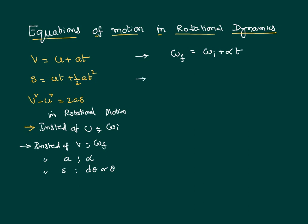Similarly, we write an equation analogous to S equal to UT plus half AT squared. In rotational form: theta equals omega-I times T plus half times alpha times T squared. And analogous to V squared minus U squared equals 2AS, we write: omega-F squared minus omega-I squared equals 2 times alpha times theta.